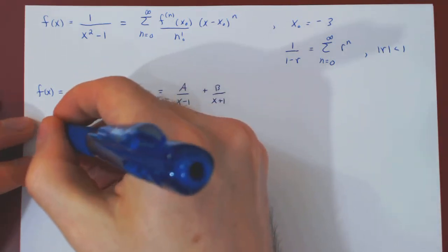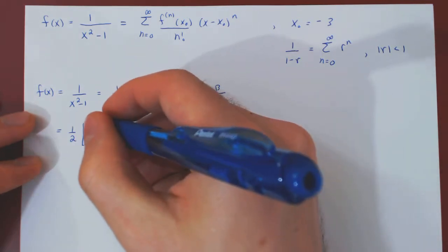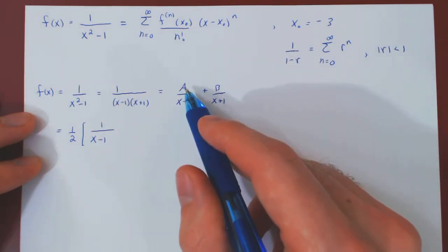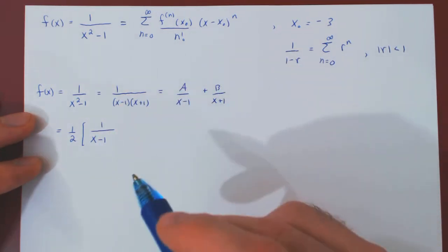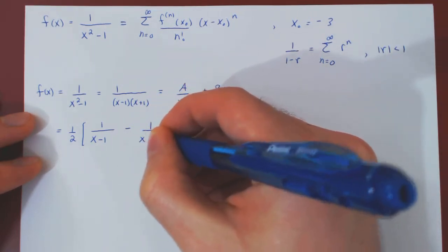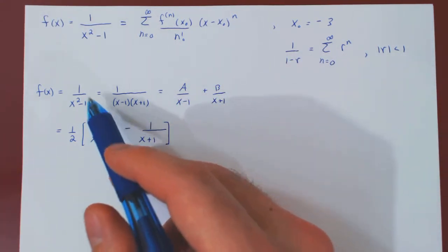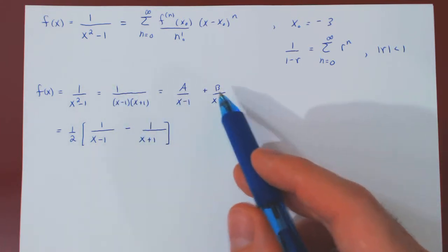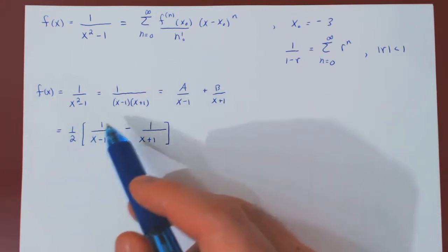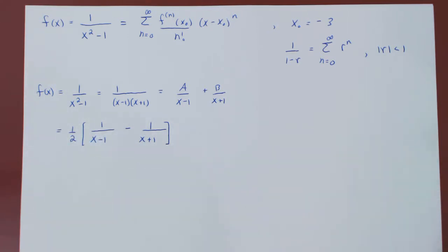Actually, you'll find that a is positive 1 half but b is negative 1 half, so it will be minus 1 over (x plus 1). That's the first step — factoring — so we can decompose the function as a sum of two simple partial fractions. As both a and b are multiples of 1 half, we can factor 1 half out front as a constant multiple.